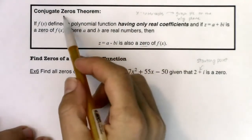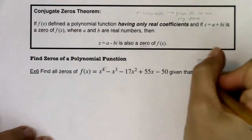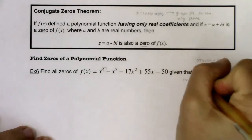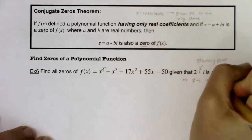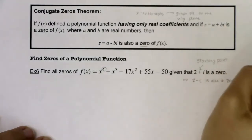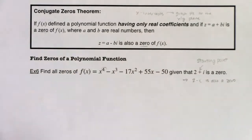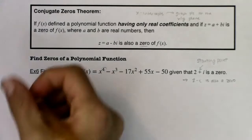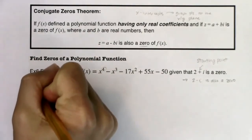Because of this conjugate zeros theorem, if two plus i is a zero, I automatically know two minus i is also a zero. Now it's up to you which one you want to start with in terms of synthetic division. I'm just going to start with two plus i. If this is a zero, I put it in the house.